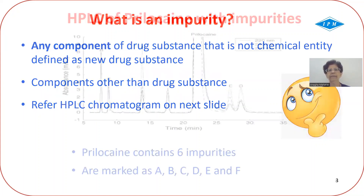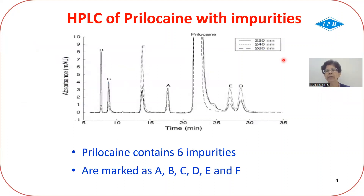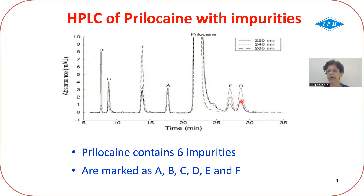You can see here a prilocaine HPLC chromatogram. The main peak is prilocaine, and the other peaks are nothing but impurities. There are six well-resolved peaks of impurities in prilocaine.